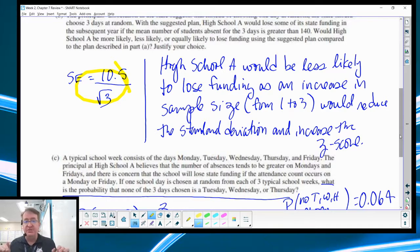So, down here, typical high school week consists of Monday, Tuesday, Wednesday, Thursday, Friday. The principal at high school A believes the number of student absences tend to be greater on Mondays and Fridays. And so, they are concerned that if one school day is random from the three typical school weeks, what's the probability that none of those days are going to be Tuesday, Wednesday, Thursday? In other words, what's the probability that it's going to be Monday or Friday?